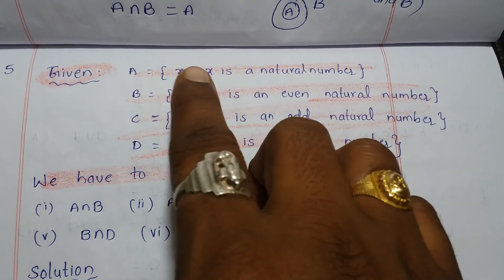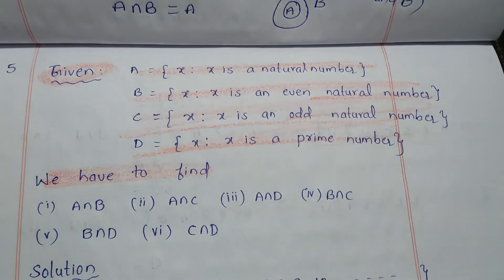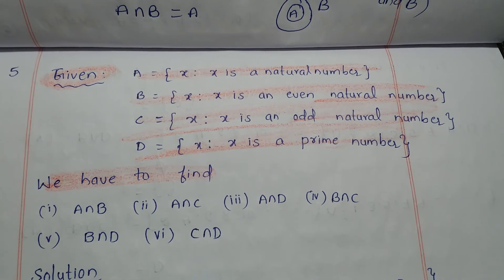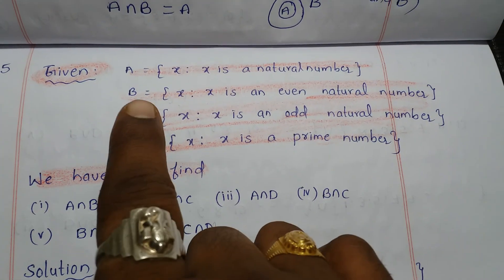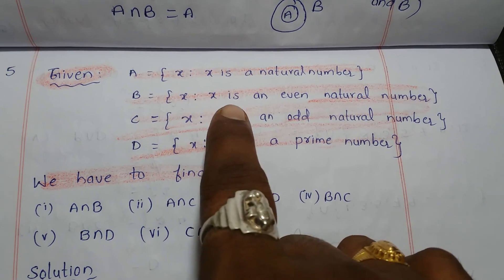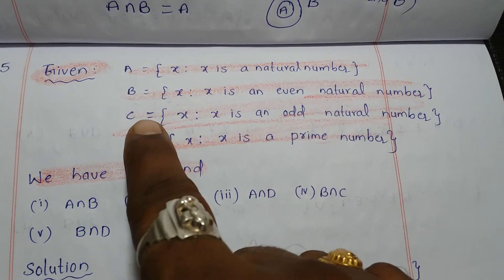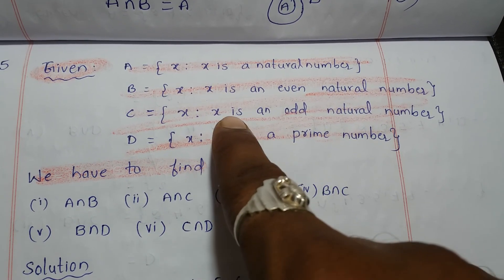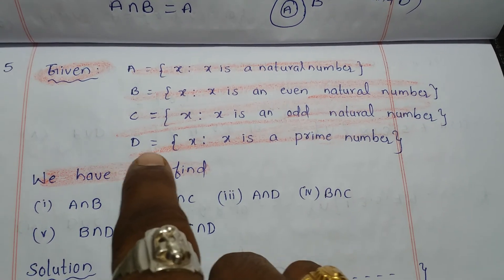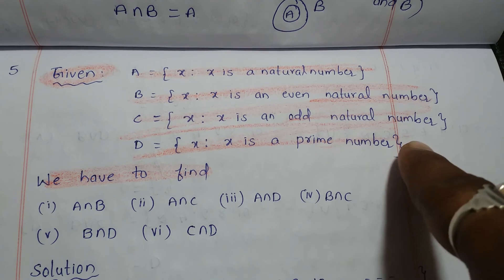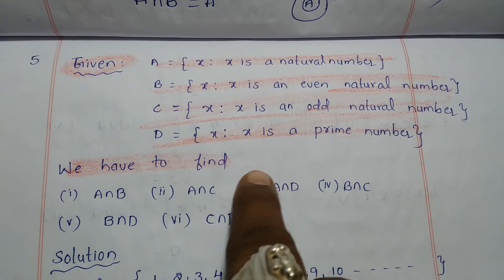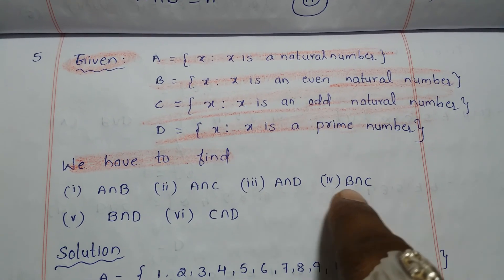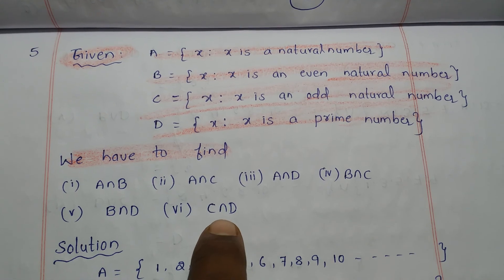We have to find A intersection B, A intersection C, A intersection D, B intersection C, B intersection D, and C intersection D. These sets are given in set-builder form, so we have to change them into roster form first, and then solve the problem.